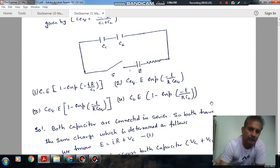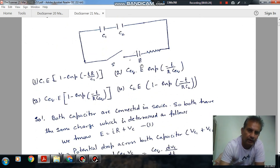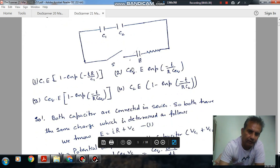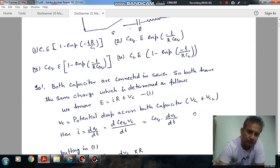Both capacitors are in series, so both have the same charge. E is the potential applied. Applying Kirchhoff's voltage law, we have E equals I R plus potential across this capacitor, which is Q by C equivalent.